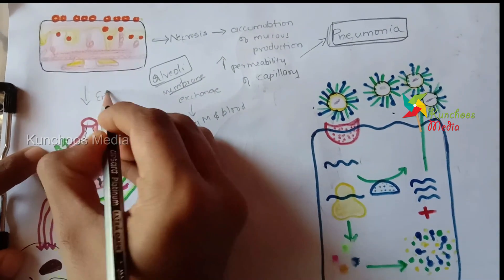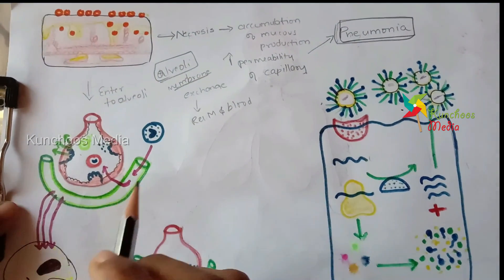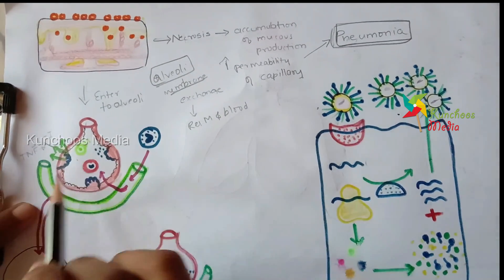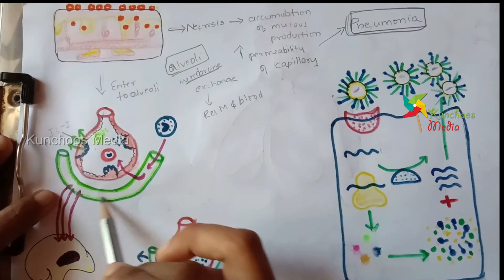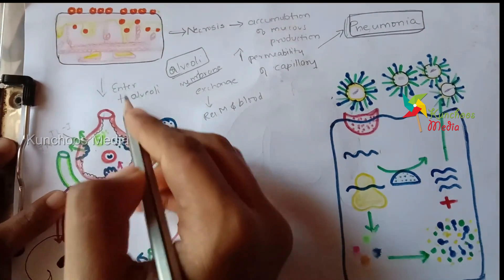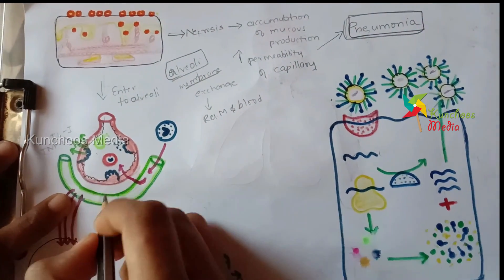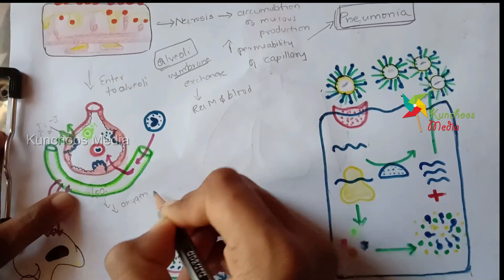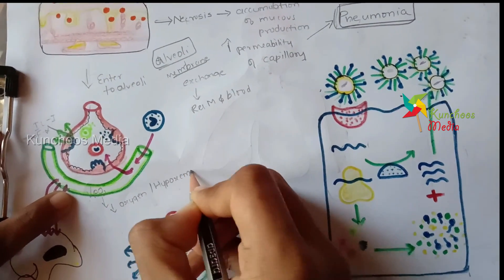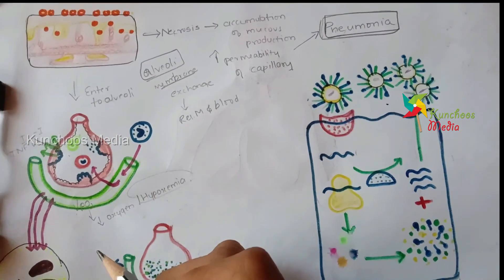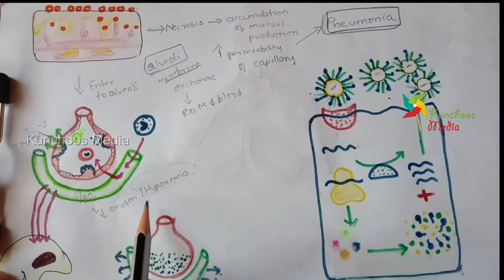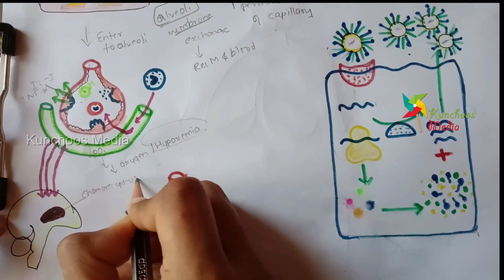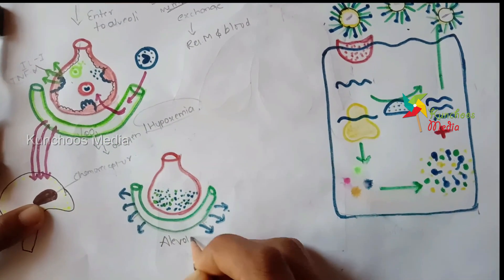When these virus particles enter into the alveoli — this is how our alveoli looks like — there are a lot of proteins here such as interleukin-1, tumor necrosis factor alpha, and others. This is the alveoli and this is the alveolar membrane. When the virus particles enter the alveoli, it decreases the partial pressure of oxygen, meaning it leads to decreased oxygen — a condition called hypoxemia. Hypoxemia is a condition where our blood doesn't have sufficient oxygen to carry out its needs, and this condition is detected by chemoreceptors present in the hypothalamus of our brain.